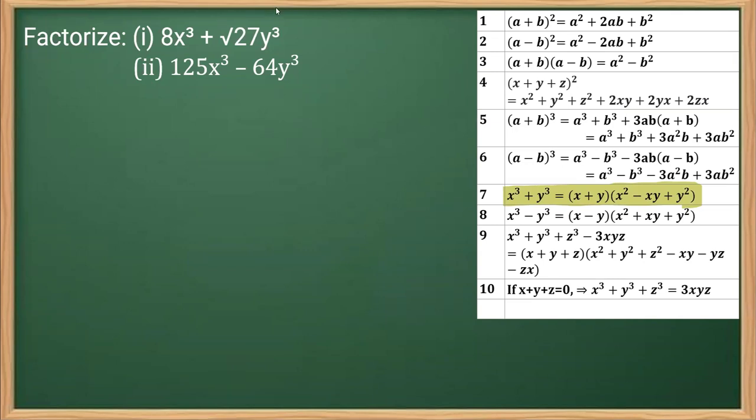So let's write on the question. First, in the first part we have this 8x³ plus whole √27y³. We know that I have to write as a³, so 8 is nothing but 2x2³, so I'll write this as (2x)³. And this is √27, you must be aware that √3 into √3 into √3 is √27, so we'll be writing this as (√3y)³.